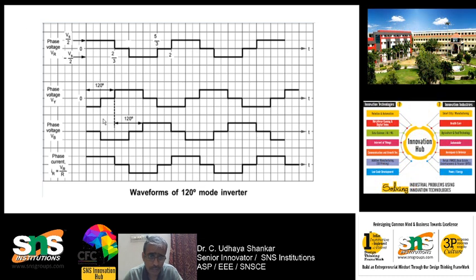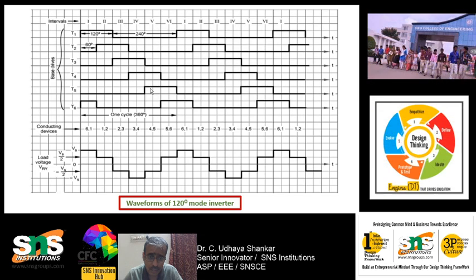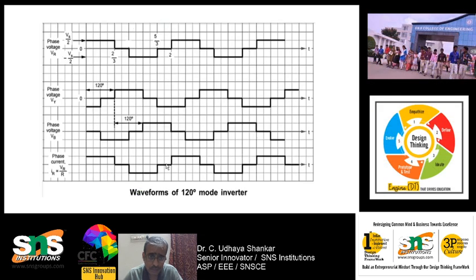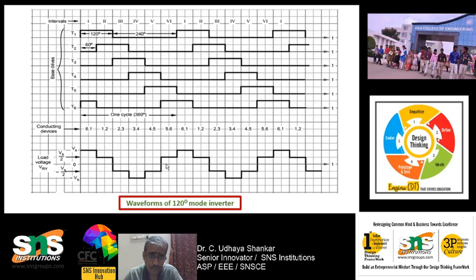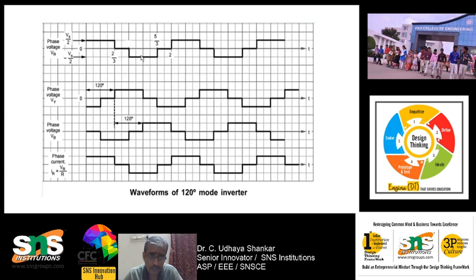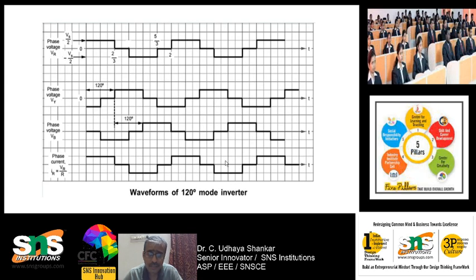You can see that between Y and B phases there is 120 degrees of phase difference. Similarly, between the phase voltage and line voltage there is a 30-degree phase shift. This is your line voltage and this is your phase voltage — 30 degrees apart — confirming that this is a three-phase waveform.